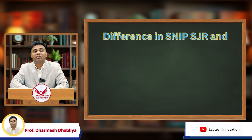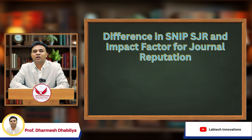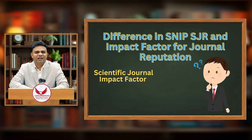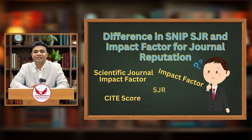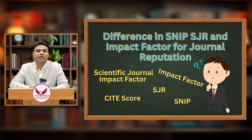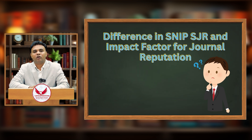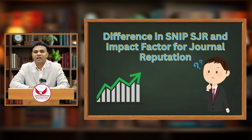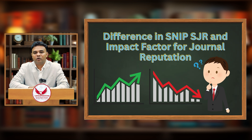Next, we will cover the difference between impact factor metrics. Many people are confused about what is the scientific journal impact factor, what is the impact factor, what is CiteScore, what is SJR, and what is SNIP. We need to understand what these parameters are, how they affect the reputation of the journal, and how they are useful for researchers to determine which journal has a higher or lower reputation.